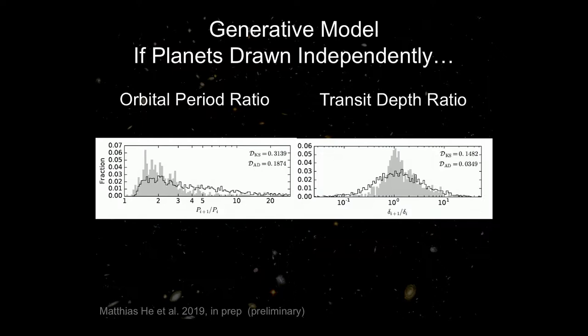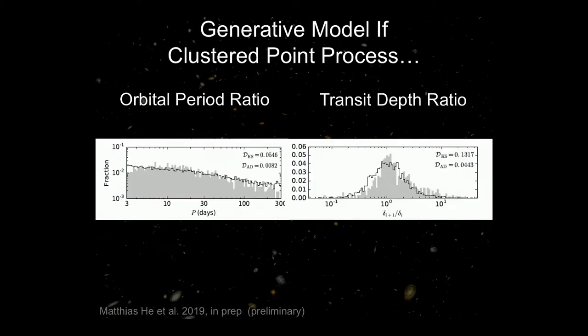We've been working on going from simple models where we have independent planets drawn in each system to using things such as a clustered point process to model the correlations in planet sizes and separations — so that instead of modeling the frequency of planets, we're now beginning to model the frequency of planetary systems. This is work that Matthias Hay, one of the graduate students at Penn State, has been working on and will be doing some papers on hopefully this year.